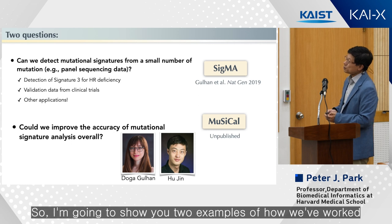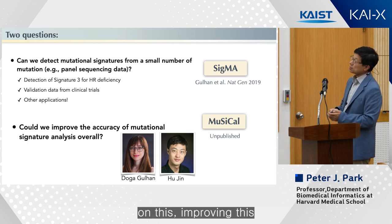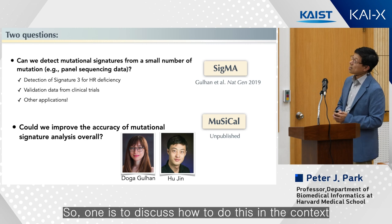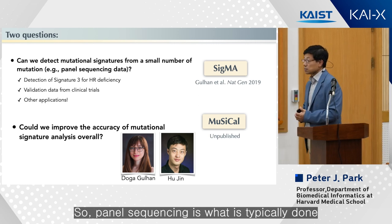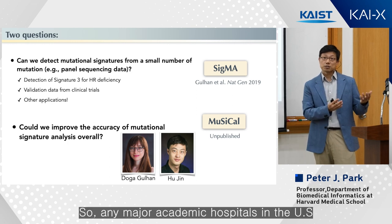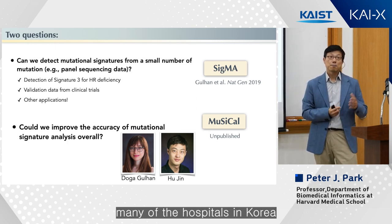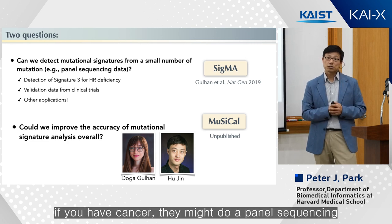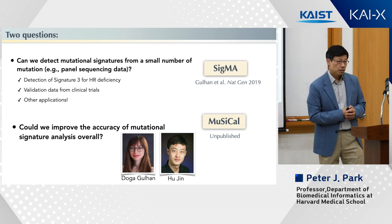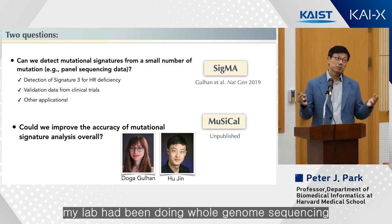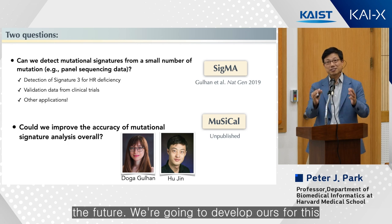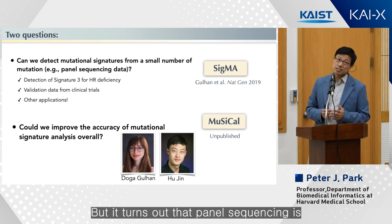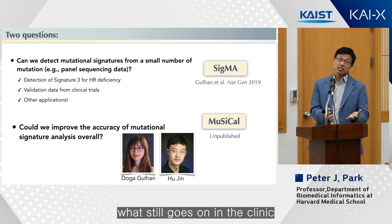I'm going to show you two examples of how we've worked on improving this. One is to discuss how to do this in the context of panel sequencing data. Panel sequencing is what is typically done if you go to a hospital right now. At any major academic hospital in the U.S. or many hospitals in Korea, if you have cancer they might do panel sequencing. You hear a lot about whole genome sequencing, but panel sequencing is still what goes on in the clinic, because whole genomes are much harder to interpret.